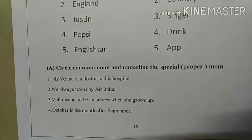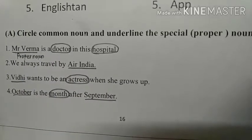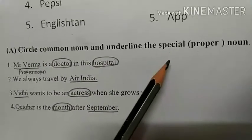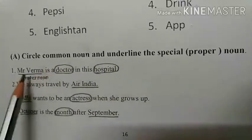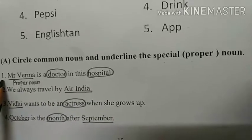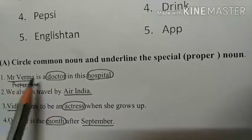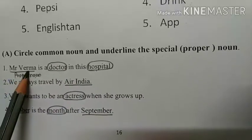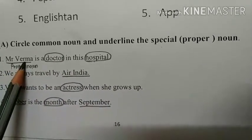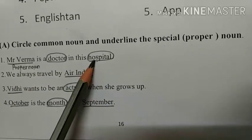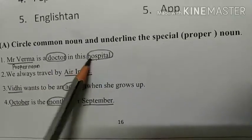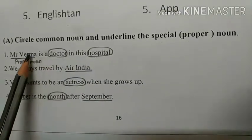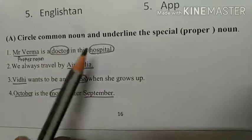Here is the first exercise: circle the common noun and underline the proper noun. The first question is: 'Mr. Verma is a doctor in this hospital.' Underline Mr. Verma as it is a proper noun. Circle doctor and hospital as they are common nouns, because they are not specific — they are general names. So we will underline Mr. Verma and circle doctor and hospital.